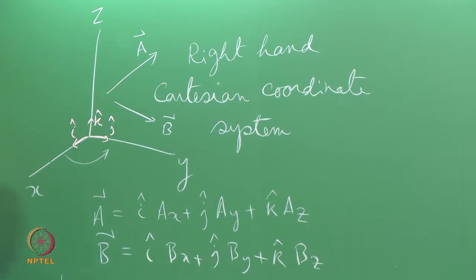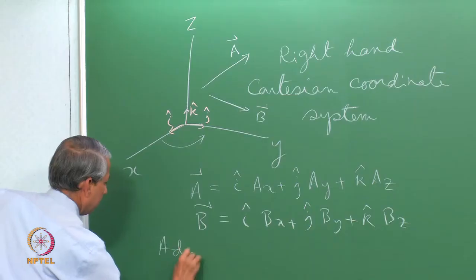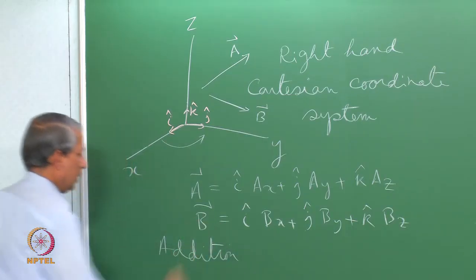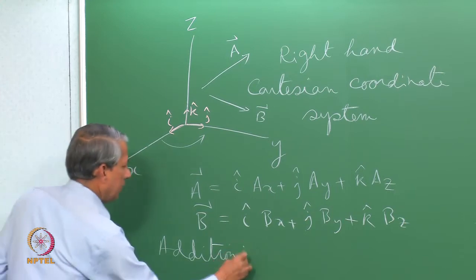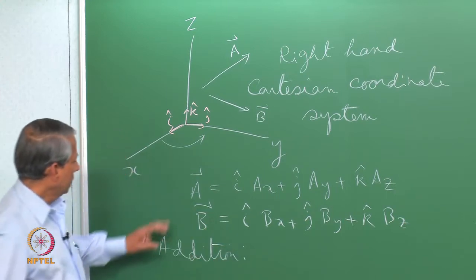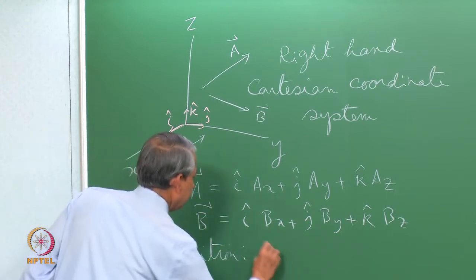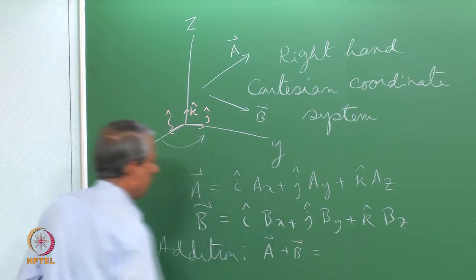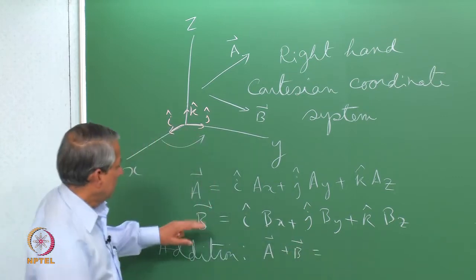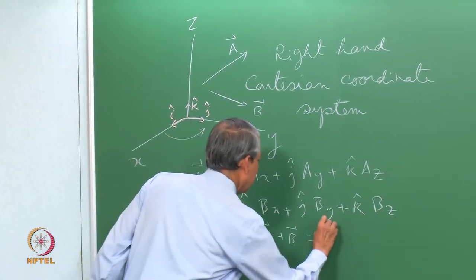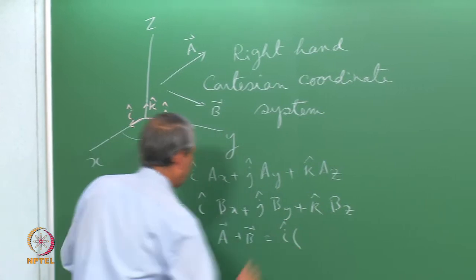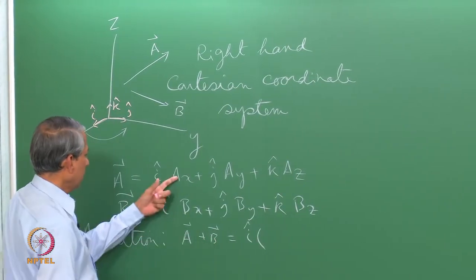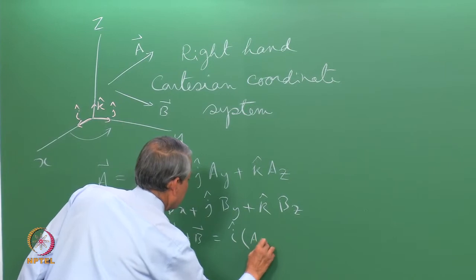Addition of vectors gives another vector, which is defined such that the components are added. So the sum of two vectors will be a vector where each component is the sum of the corresponding components.